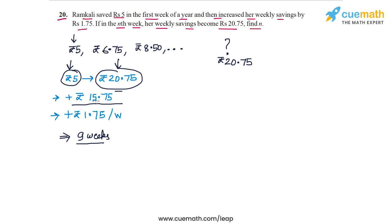So the week number or the index of the week in which the savings become Rs. 20.75 is 10, 9 plus 1 or 10. Now let's do the same thing, let's rephrase the solution in terms of arithmetic progressions.